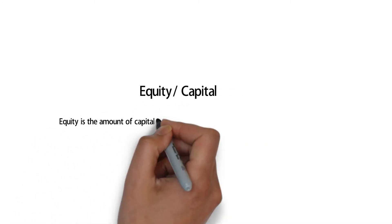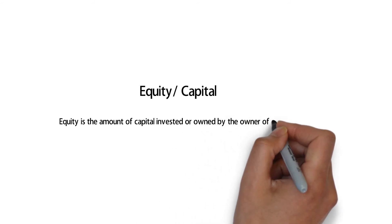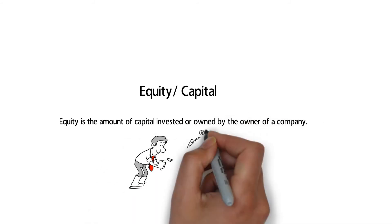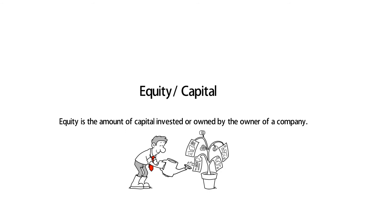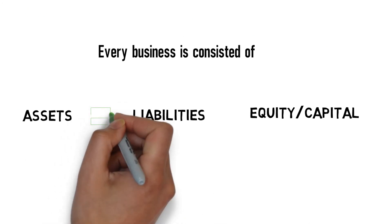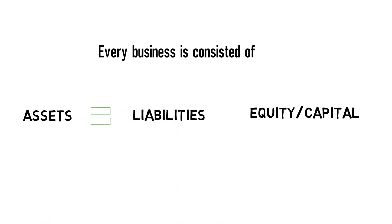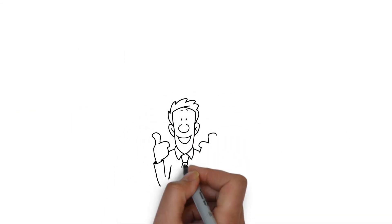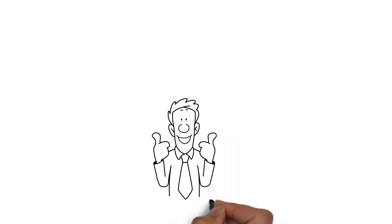What is equity or capital? Equity is the amount of capital invested or owned by the owner of a company. Getting back to the accounting equation: assets always equals liabilities plus capital or equity, and this definition will always remain the same.